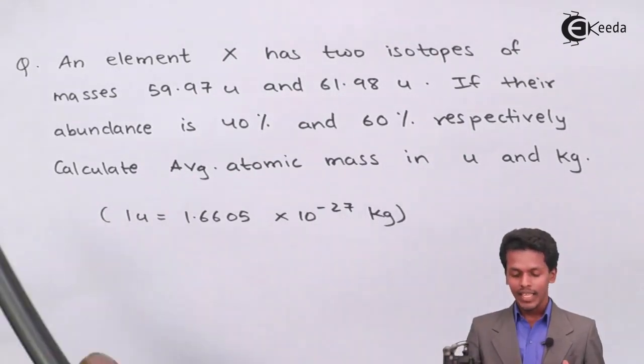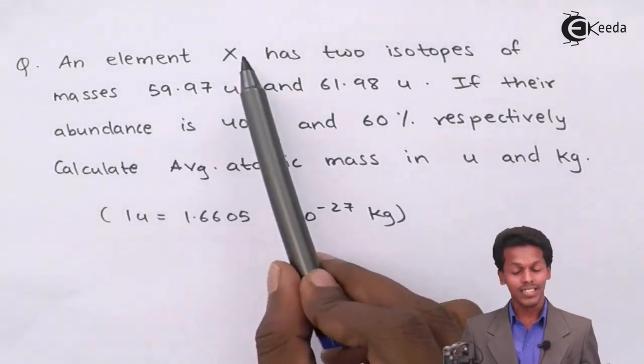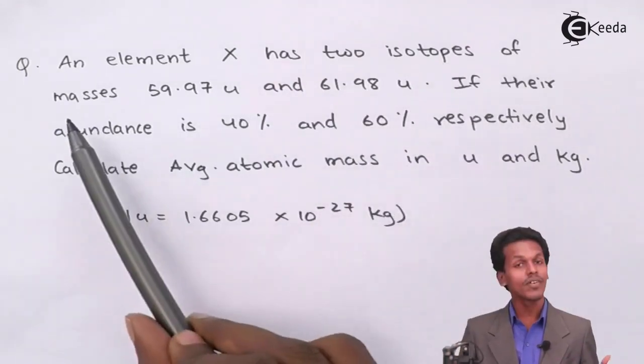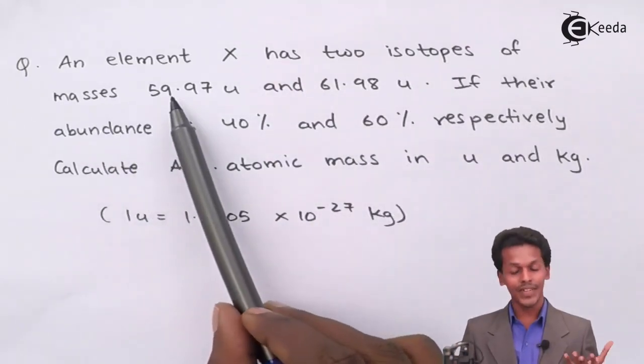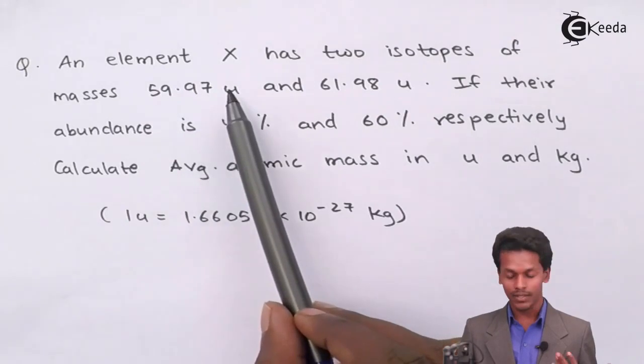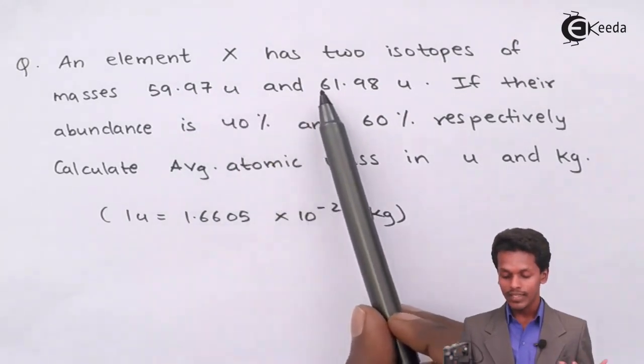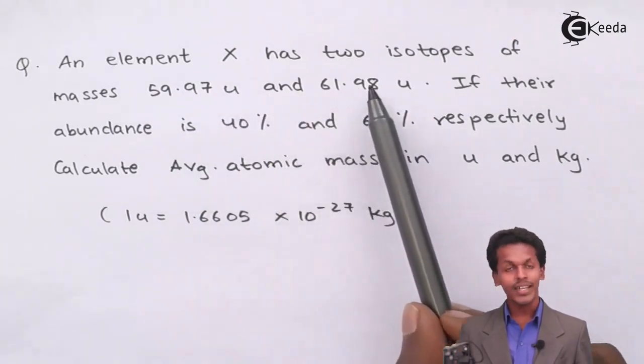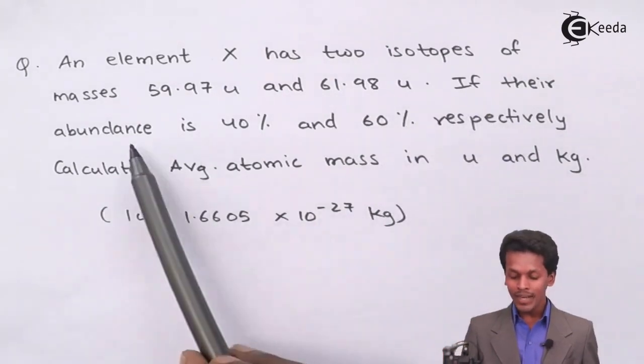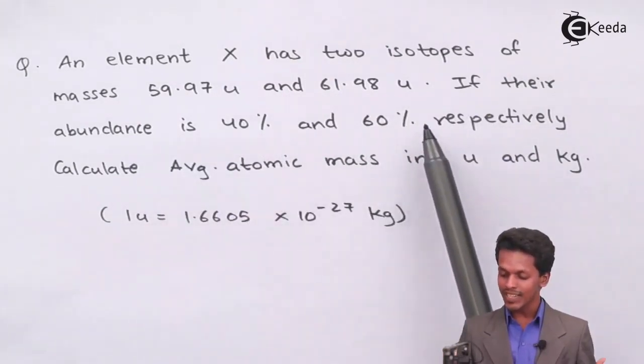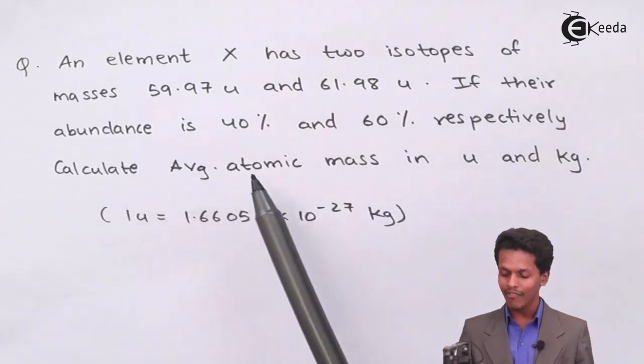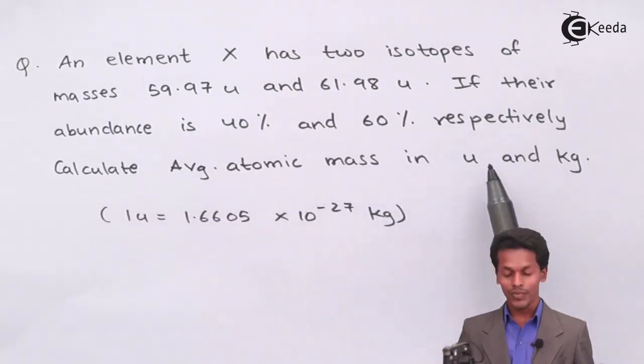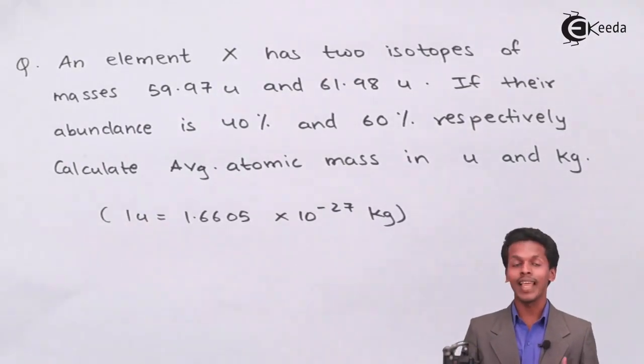They have mentioned that we have an element X which has two isotopes of masses 59.97 u and 61.98 u. If their abundance is 40% and 60% respectively, then we have to calculate the average atomic mass in unified mass as well as in kg. This is a different kind of numerical with an extra step we have to follow.